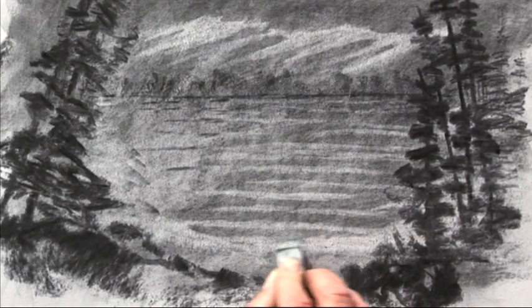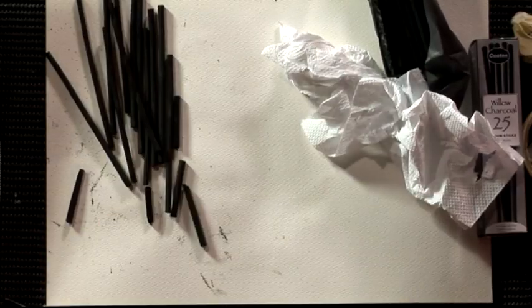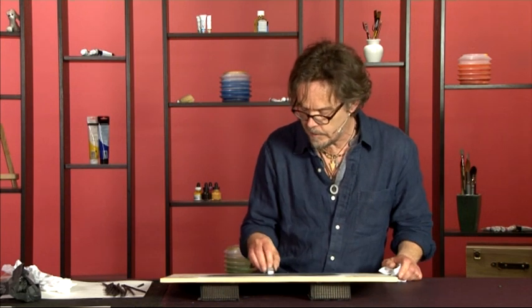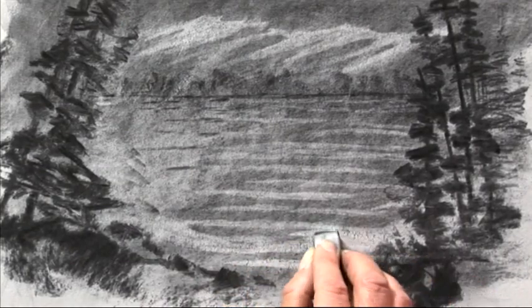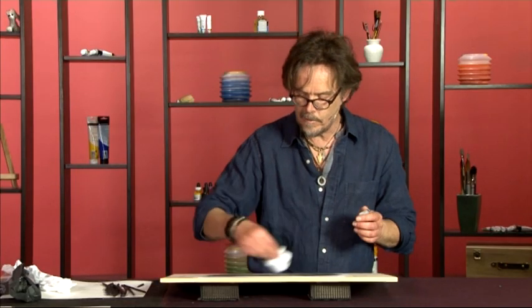And then finally back with our eraser. We can enhance the ripples in the foreground a little bit more. Make sure that when your eraser gets clogged with charcoal just to give it a little wipe. So you can lift off more of the mid-tone colour that you had to start with. So we'll waft off the excess.